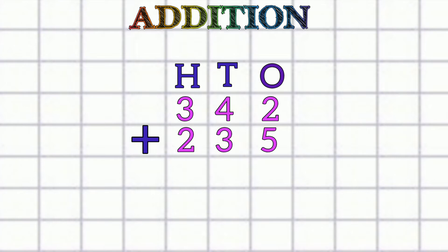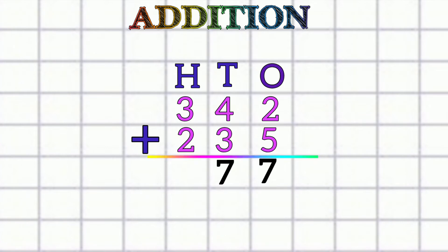Let's understand the first example. First we add the ones place numbers: two plus five equals seven. Then the tens place: four plus three equals seven. Then the hundreds place: three plus two equals five. So our answer is five hundred seventy-seven.